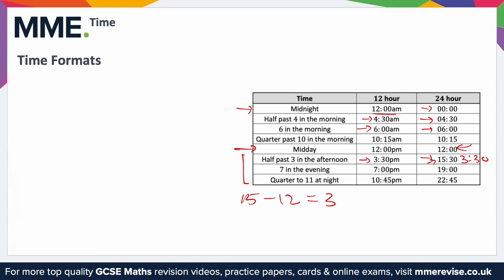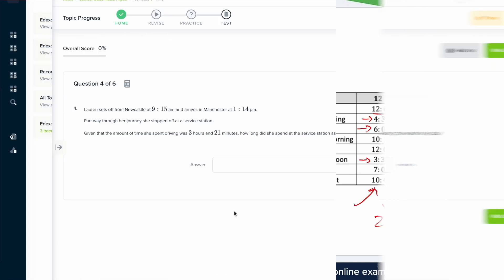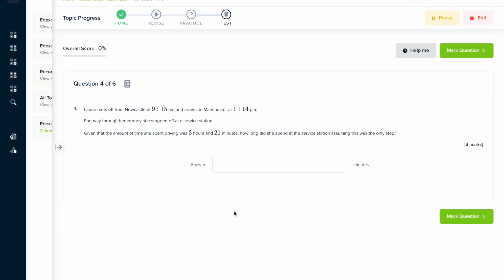If you're ever given a time in a 24-hour format and struggling to read it, you can subtract 12 hours from it to tell the time. For example, 22:45 — if you just take away 12 from the hours you get 10:45, so 22:45 is equivalent to 10:45 in the evening.